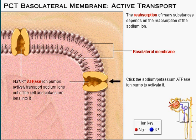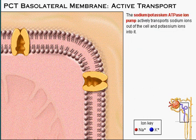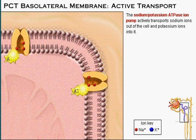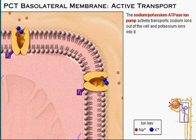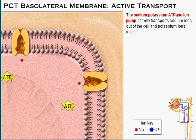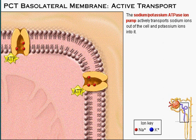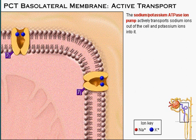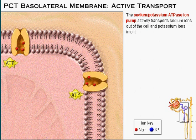Orient yourself to the parts of the scene and then click the sodium-potassium pump to activate it. Using energy from ATP, the ion pump carries out primary active transport of sodium ions out of the cell and potassium ions into the cell. As it yields its energy, ATP is converted to ADP and an inorganic phosphate ion, or Pi.